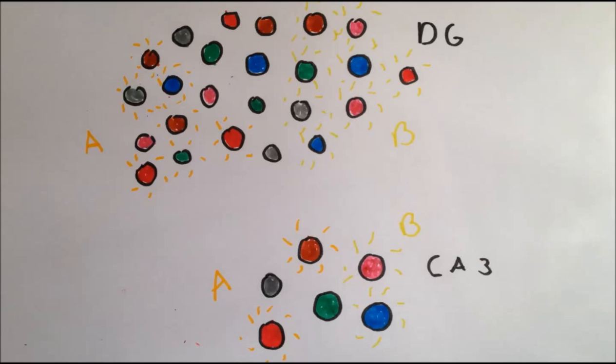Therefore, the dentate gyrus ensures that unique populations of cells get activated each time. However, evidence suggests this may not be the only mechanism.